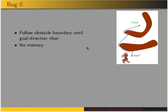Bug zero is the simplest of the bug algorithms, and it has no memory. The way it works is it goes in the direction towards the goal until it encounters an obstacle, and then it wall follows until the goal direction is clear. Then it heads towards the goal again until it encounters another obstacle and follows it until the goal direction is clear again. By no memory, it means there's no record of where it's traveled already — it's only looking at the sensors and the goal direction.